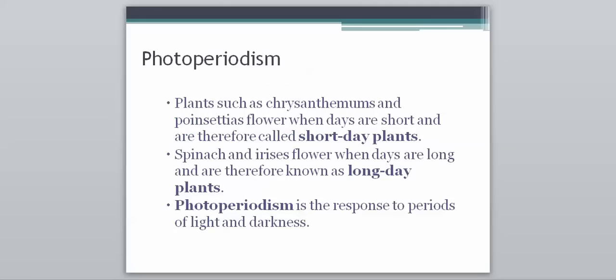Plants such as chrysanthemums and poinsettias flower when days are short, and therefore they're called short day plants. They only let their flowers show when the days are shorter. Spinach and irises, on the other hand, flower when days are long, and therefore they're known as long day plants.